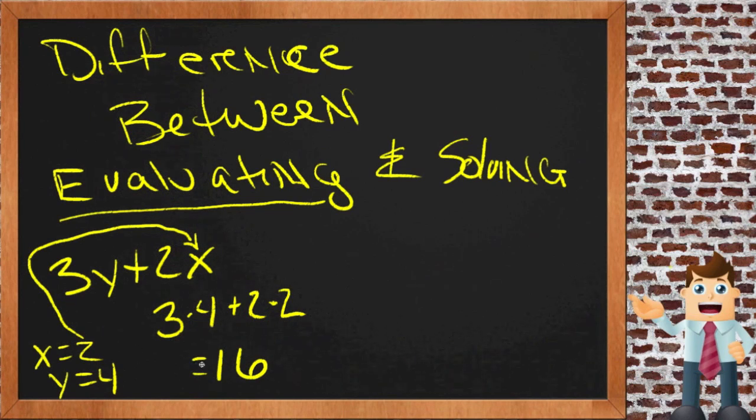So that's evaluating this statement. 3y plus 2x evaluated for these values is 16.